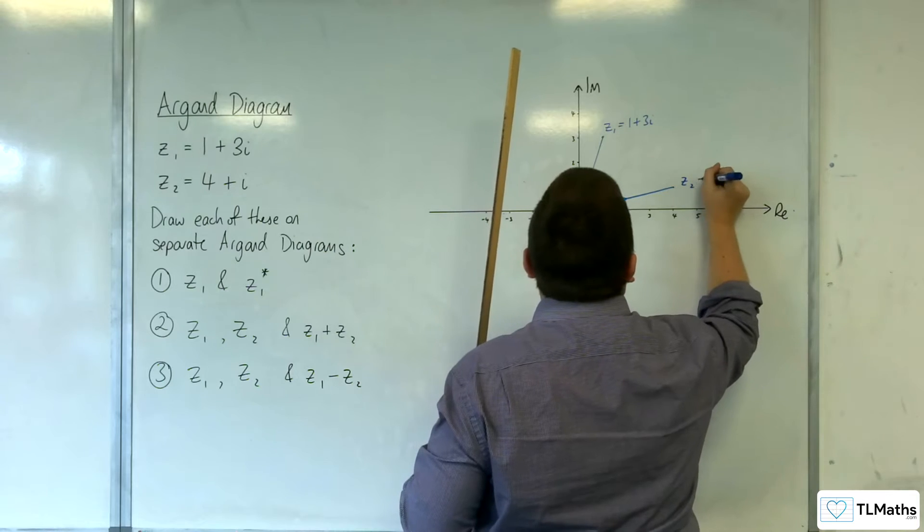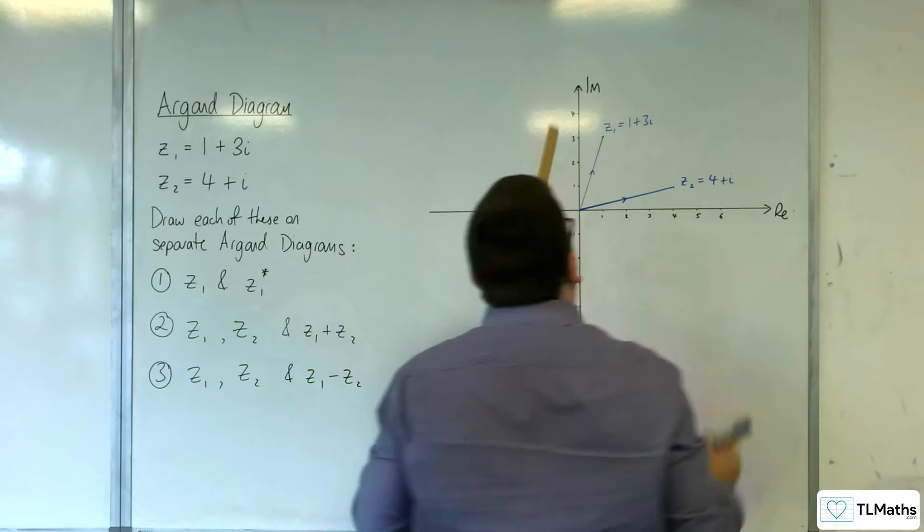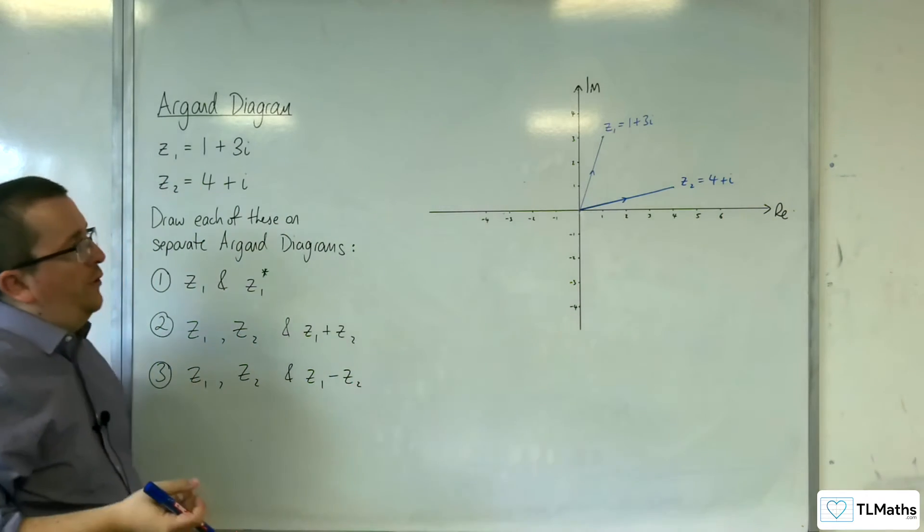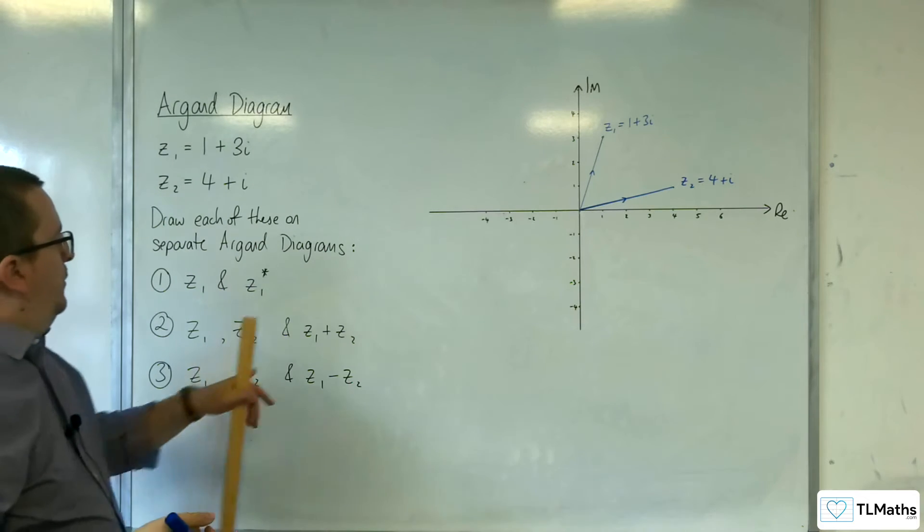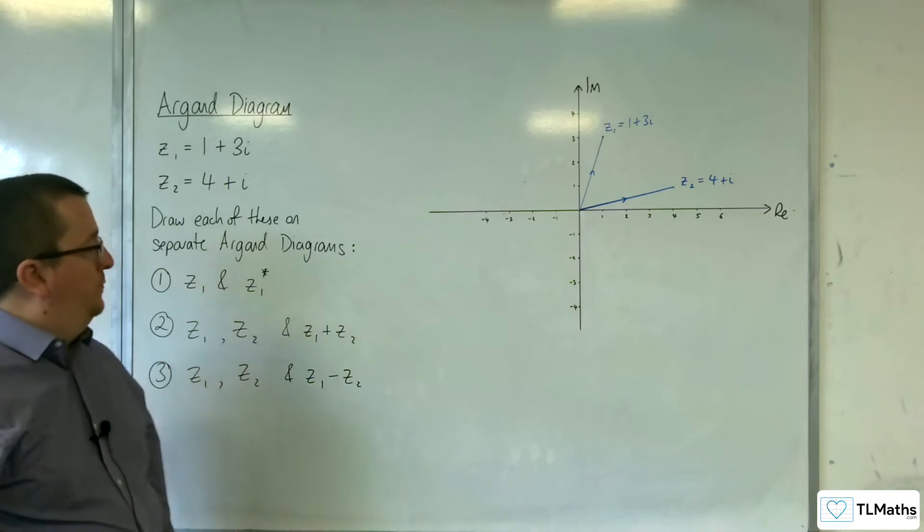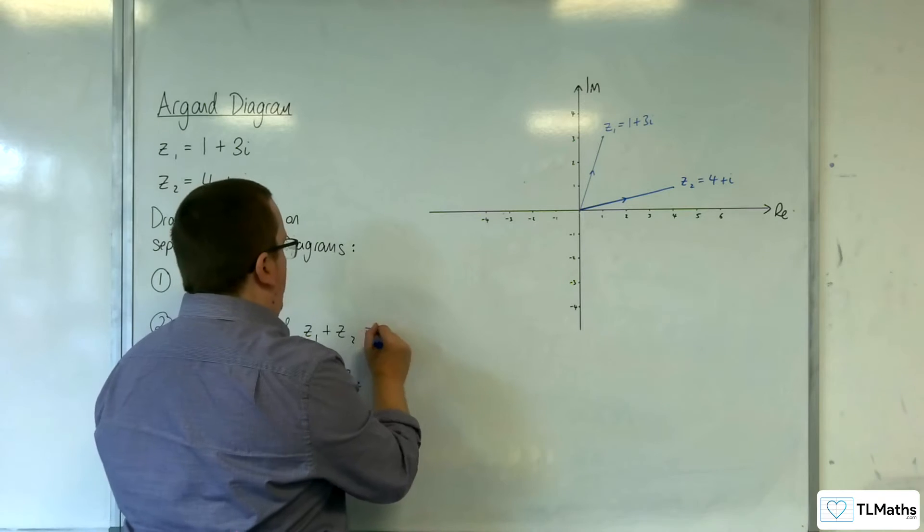So, Z2, 4 plus i. Okay, so I've got Z1 and Z2 represented there. So, Z1 plus Z2, so we worked that out.